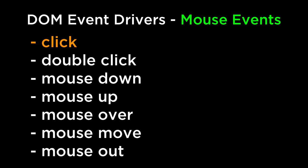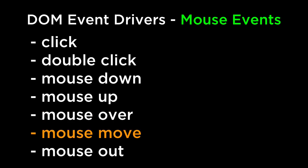A mouse double click event fires when the mouse button is double clicked over an element. A mouse down event fires when the mouse button is pressed over an element. A mouse up event fires when the mouse button is released over an element. A mouse over event fires when the mouse cursor is moved onto an element. A mouse move event fires when the mouse cursor is moved while over an element. A mouse out event fires when the mouse cursor moves away from an element.